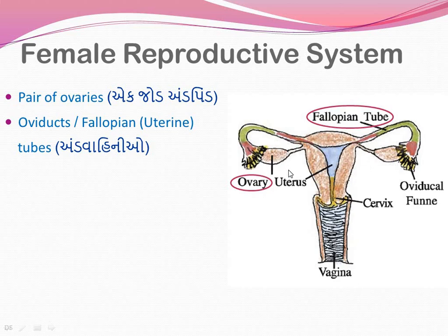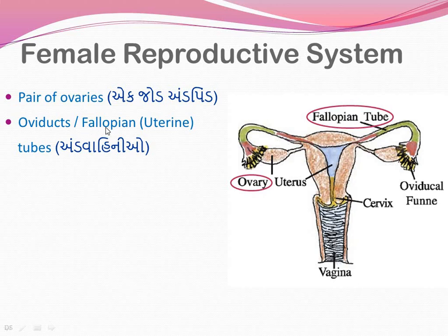At each menstrual cycle, on the 14th day of an average 28-day menstruation cycle, there is ovulation. Ovulation means the release of the secondary oocyte. The secondary oocyte travels through the fallopian tube towards the uterus. Because it allows the movement of ovum or secondary oocyte, we call it the oviduct - another name is fallopian tube. In NCRT, the detailed structure of the fallopian tube is explained.